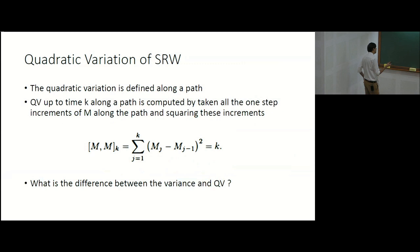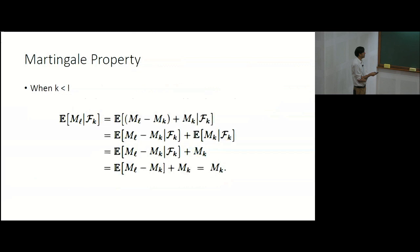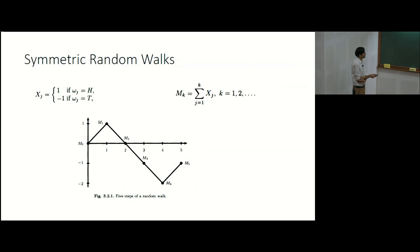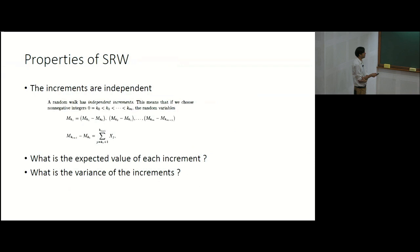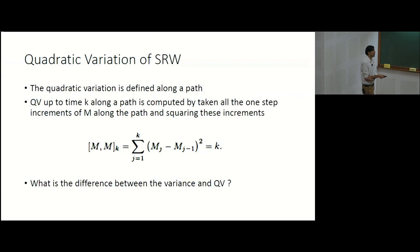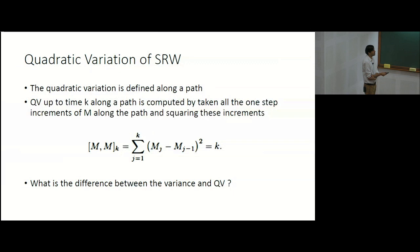The quadratic variation is the sum of squares of each individual increment. For the symmetric random walk, each Xj is ±1, so each squared increment equals 1, and summing from j=1 to k gives a quadratic variation equal to k. This will be important going forward.